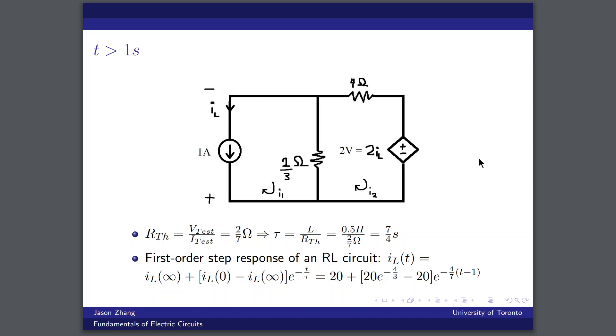We should note that for this particular interval, we have a first order step response in our RL circuit. The difference in this case between the last case is because IL at infinity is no longer 0. Between 0 and 1 second, IL infinity was 0 amps because there was no independent source. But in this case, that's not true. It's actually equal to 20 amps because we do have an independent source. And so we can write our expression for I of L as a function of t like so.